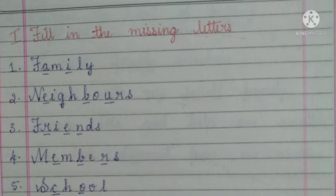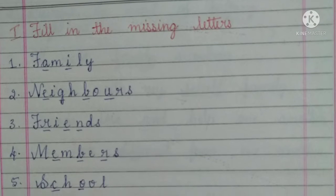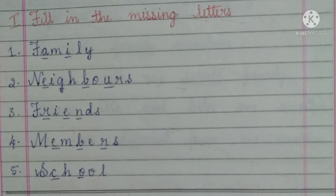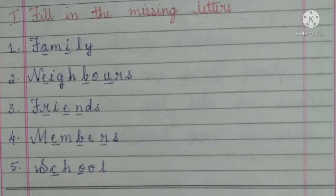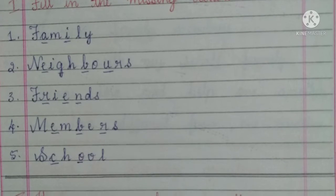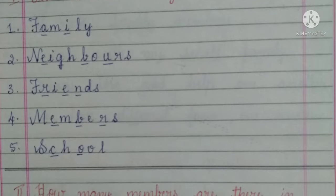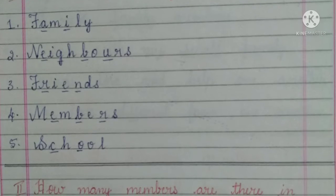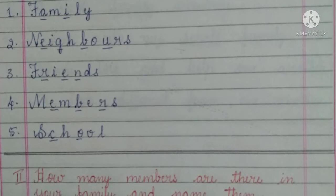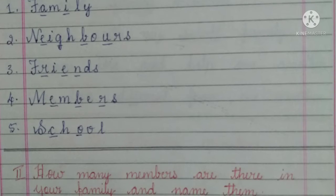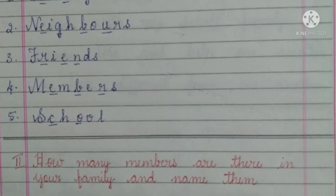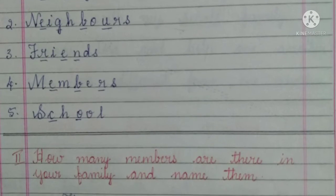First main: fill in the missing letters. Number one, family: F-A-M-I-L-Y. Number two, neighbors: N-E-I-G-H-B-O-U-R-S. Number three, friends: F-R-I-E-N-D-S.